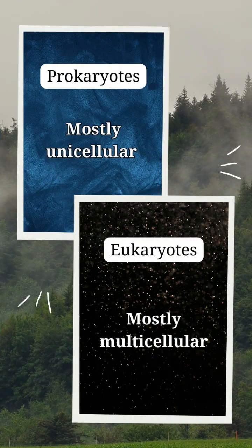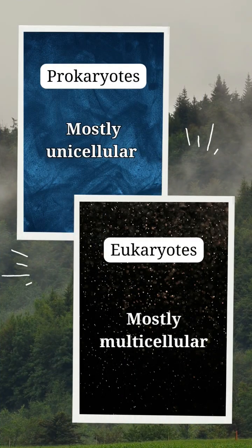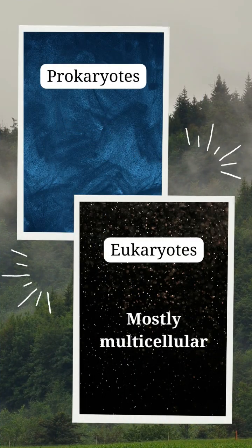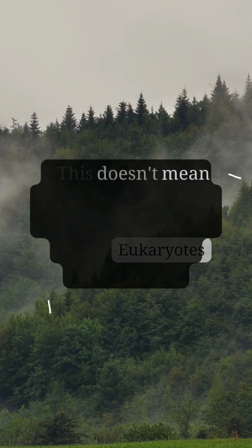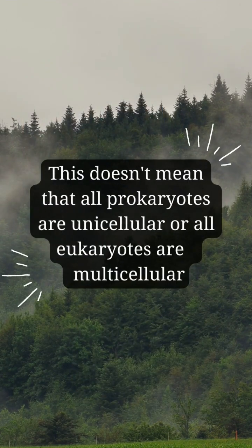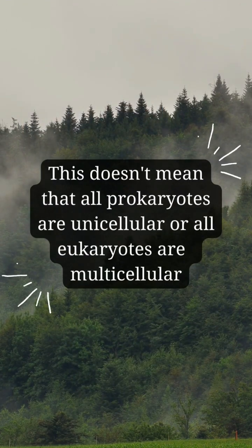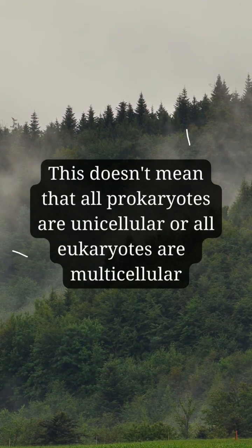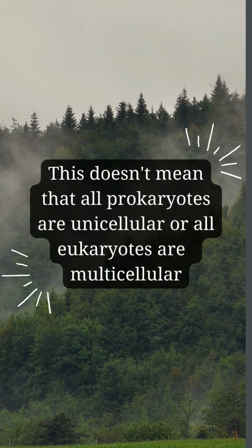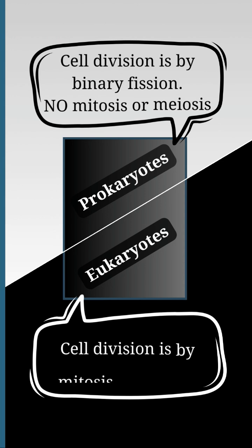Prokaryotes are mostly unicellular, while eukaryotes are mostly multicellular. But this doesn't mean that all prokaryotes are unicellular or all eukaryotes are multicellular.